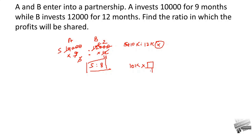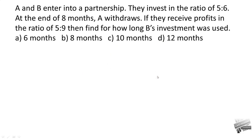Moving on to the next partnership question: A and B enter into a partnership and invest in the ratio of 5 to 6. At the end of eight months, A withdraws. If they receive profits in the ratio of 5 to 9, find for how long B's investment was used. Their capitals are 5x for A and 6x for B.